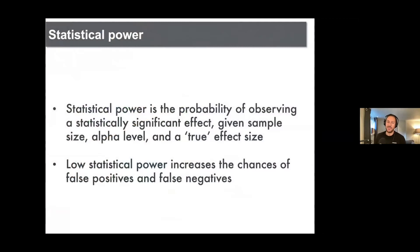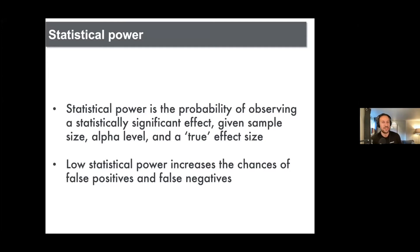When we're talking about statistical underpower, it is essentially the probability of observing a statistically significant effect given a sample size, an alpha level — which is typically 0.05 — and a true effect size. Low statistical power increases the chances of false positives and false negatives. Conventionally in a lot of research fields, you tend to aim for 80% statistical power; in other fields, it's up to 90% or 95%.